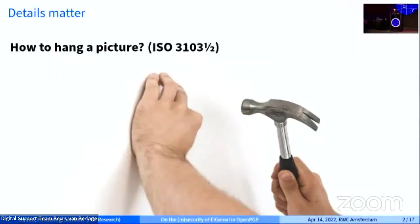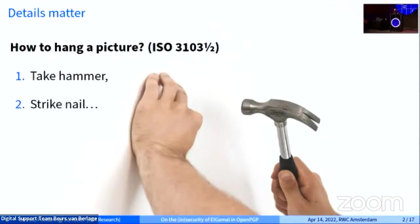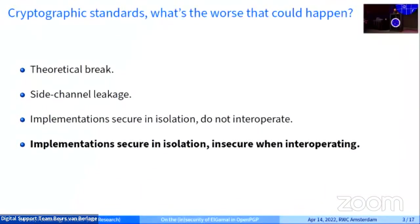Let's say we're writing a NIST standard for how to hang pictures — you must be careful how you state things, because an obvious ambiguity is where problems may arrive. If instead of writing a standard on how to hang pictures, we are writing a standard on how to do cryptography, the worst that can happen is that your protocol may be just broken. Something that may happen is that the protocol is fine, the specification is correct, but details are in the implementation, and there may be some side-channel leakage you can exploit. We're going to talk about something more subtle: when the specification is about a cryptographic algorithm that has no problem on its own, but is under-specified, making it difficult to write a correct implementation.